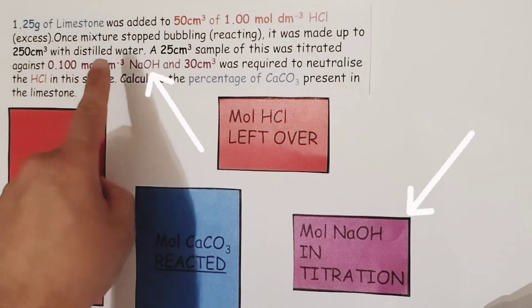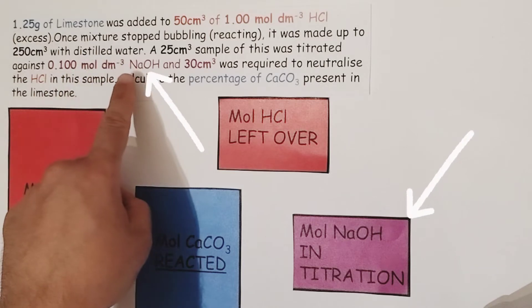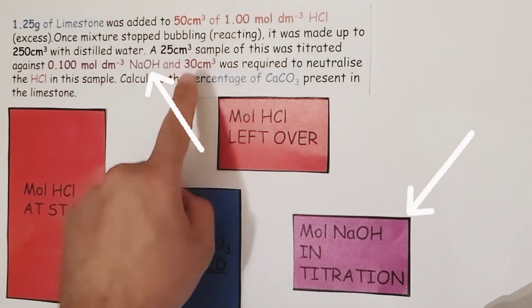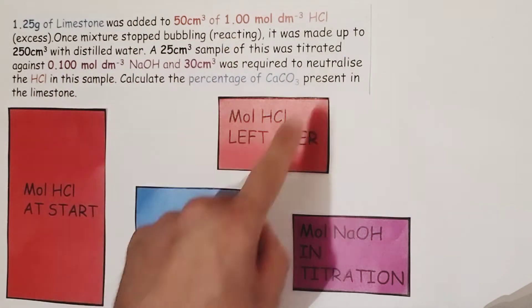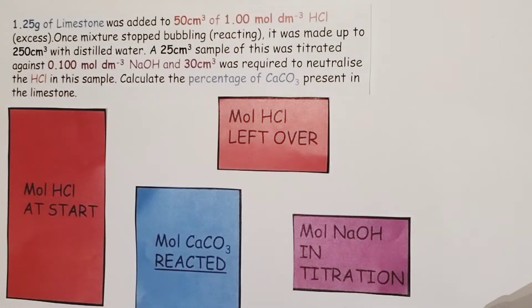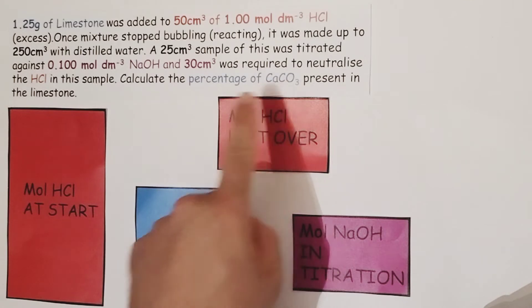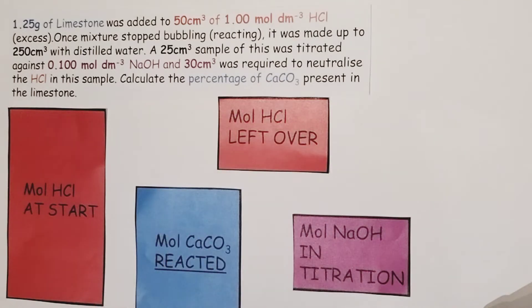Then 25 centimetres cubed samples of that acid were titrated against 0.1 molar sodium hydroxide, and it took 30 centimetres cubed of sodium hydroxide to completely neutralize that small sample of leftover hydrochloric acid. We're then asked to calculate the percentage of calcium carbonate present in the limestone.